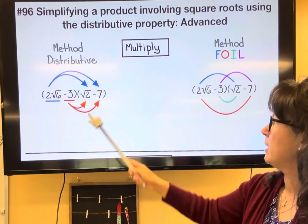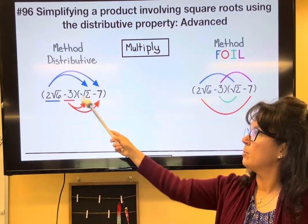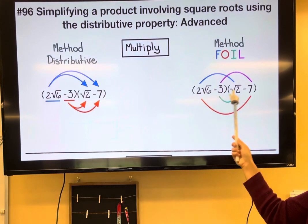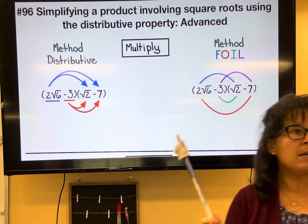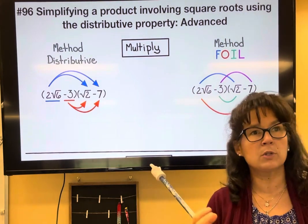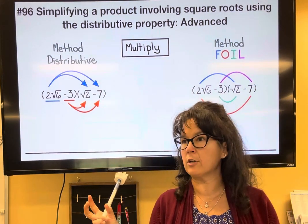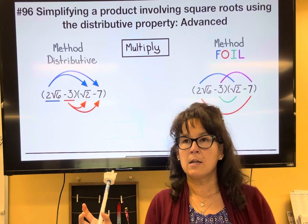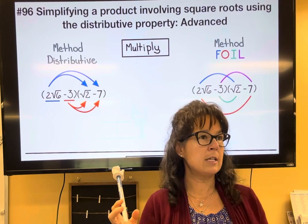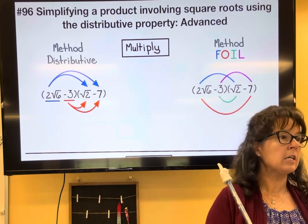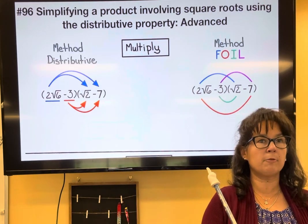If you want to multiply a binomial times a binomial, something that may be familiar to you is FOIL, where you do First, Outer, Inner, Last. But let's look at where that comes from — it's really the distributive property.